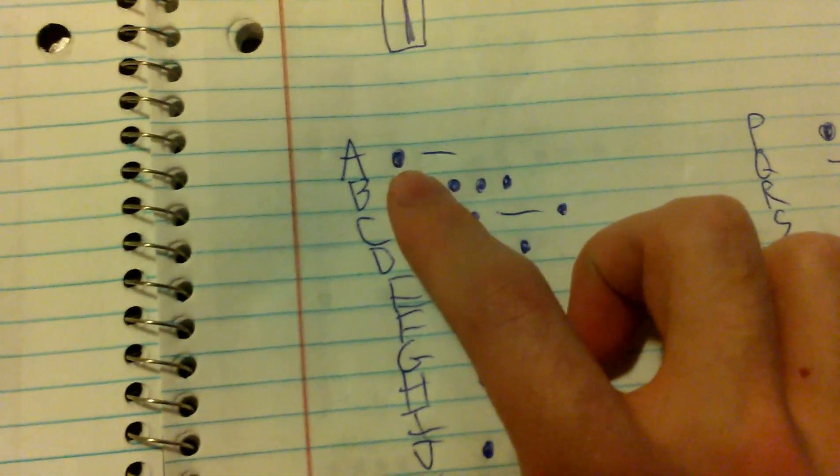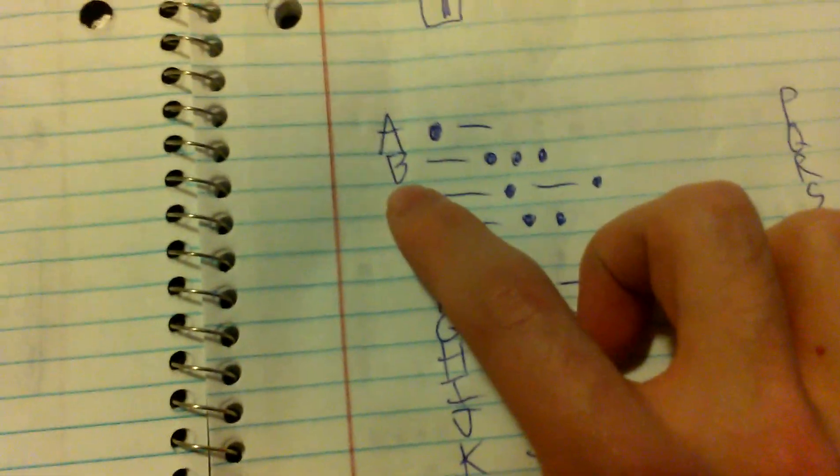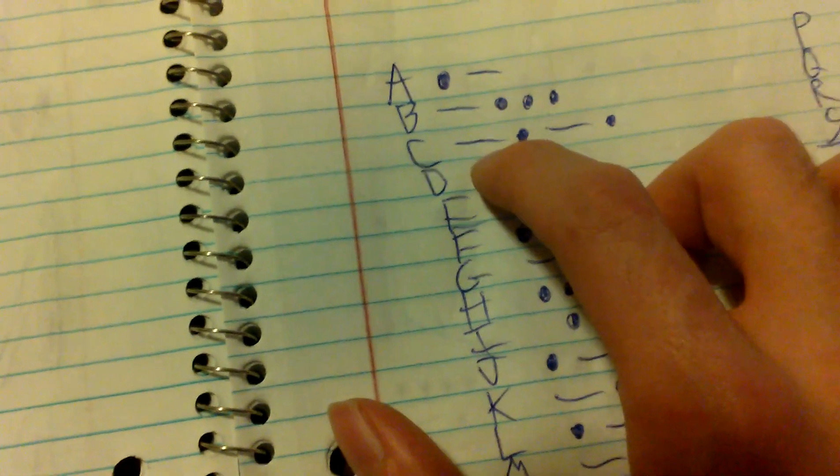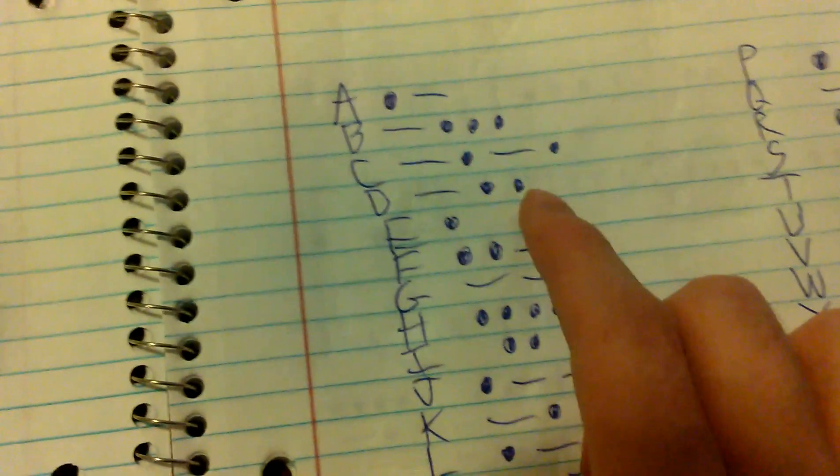If you look, an A is made of one dot and a dash, a B is one dash and three dots, a C is dash dot dash dot, a D is dash dot dot, and an E is a dot.